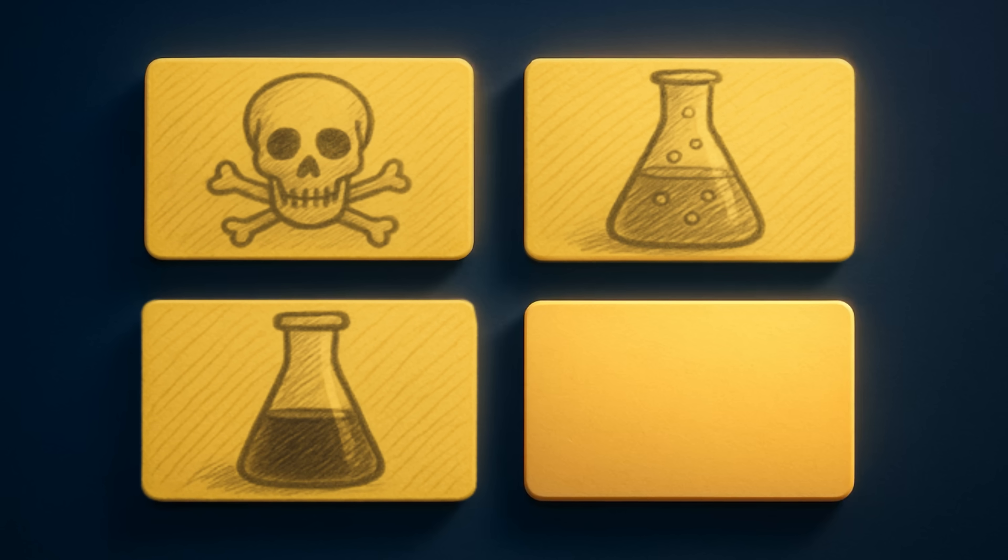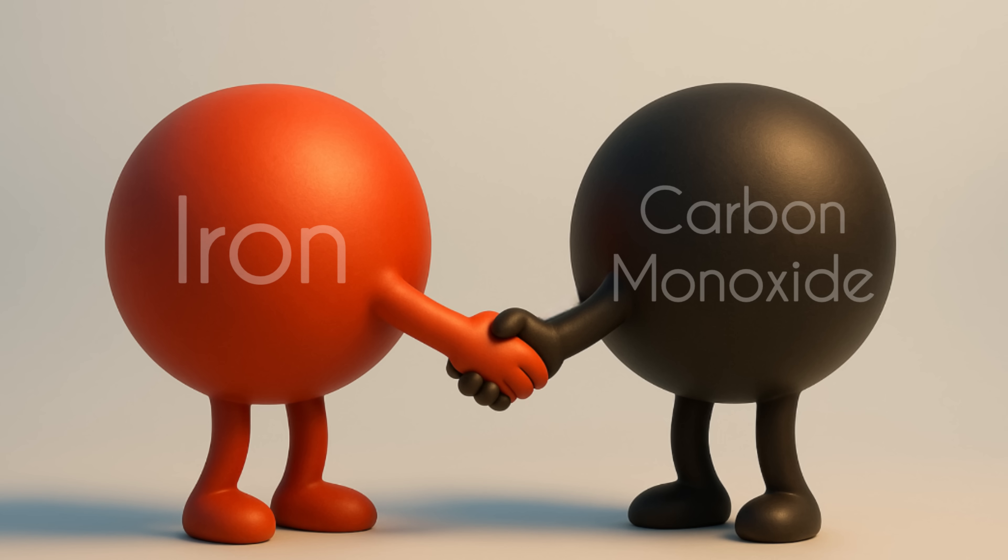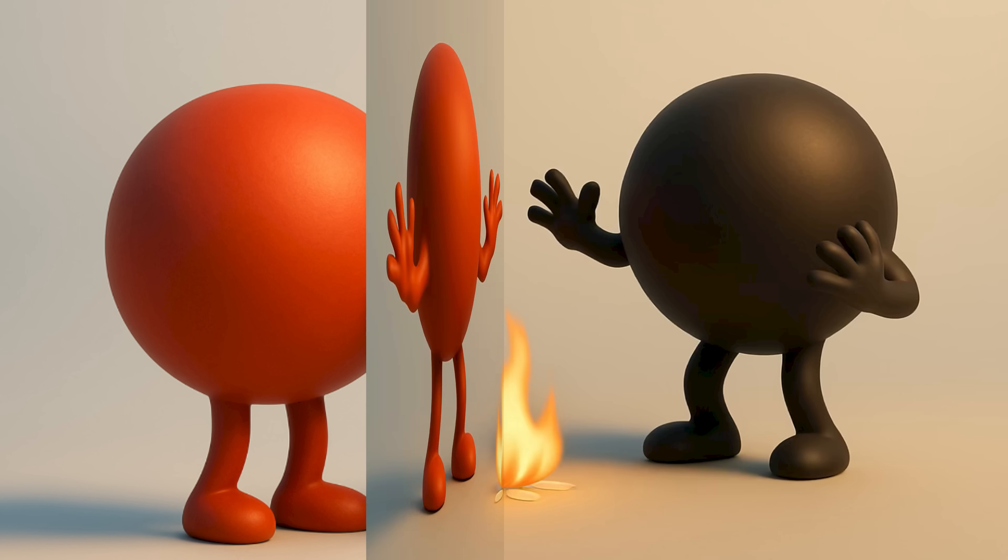They have a distinct color—iron carbonyl, for example, can be from yellow to dark red. And they're volatile—they decompose easily when heated, releasing the pure metal.